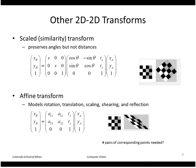A more general transformation is an affine transform, which means we can put an arbitrary 2 by 2 matrix here and still have our translation. This will model rotation, translation, scaling, shearing, and reflection. This transform has six degrees of freedom because there are six numbers. To calculate the transform from corresponding pairs of points, we would need three points, because each point contributes two equations and we have six unknowns.